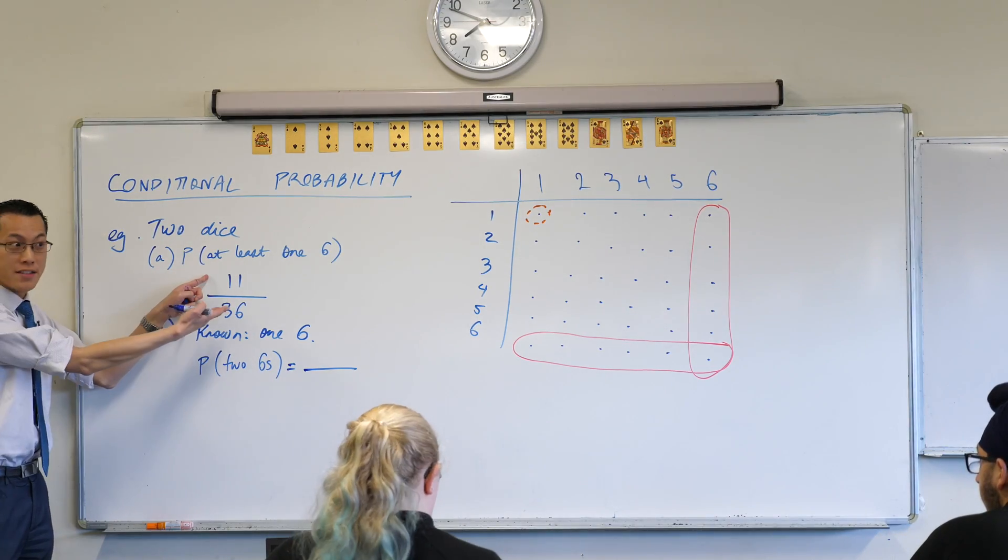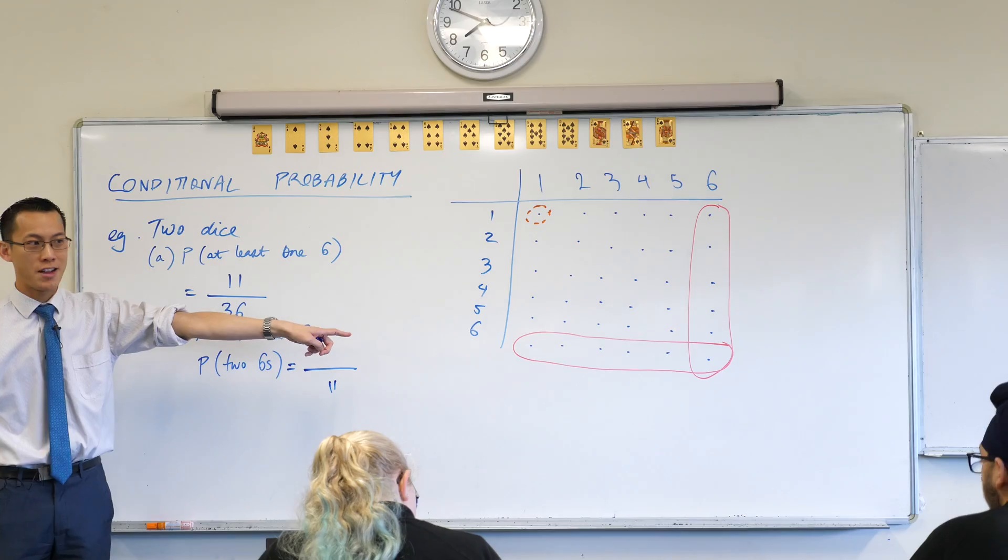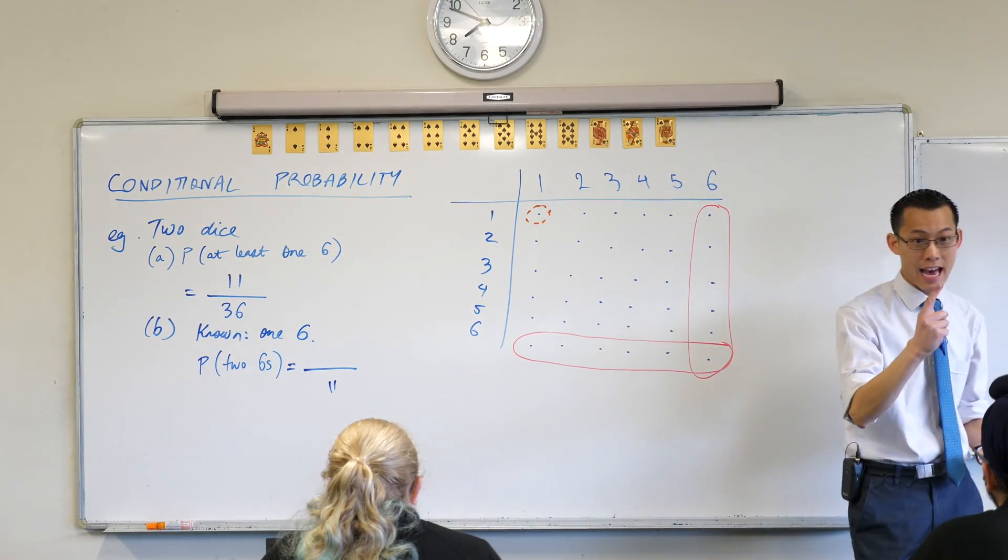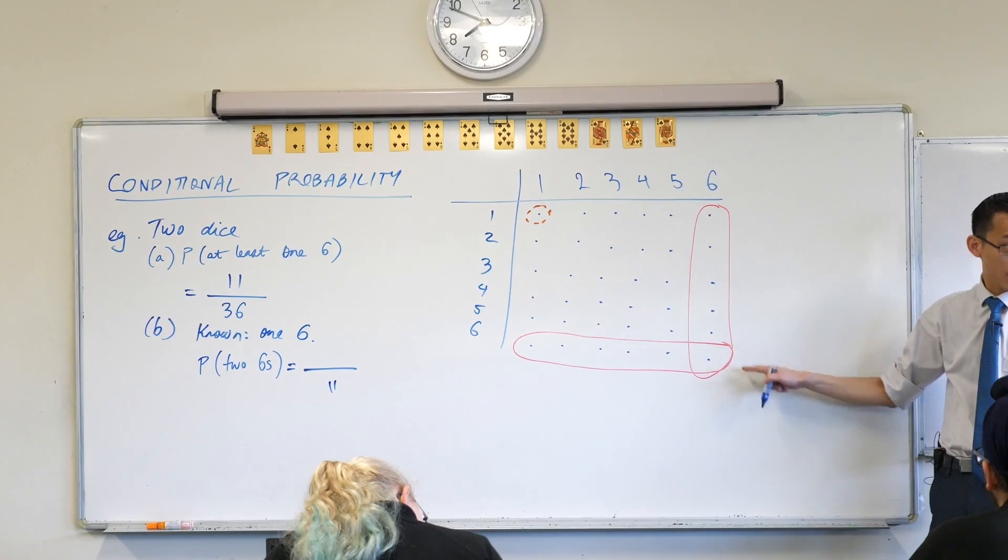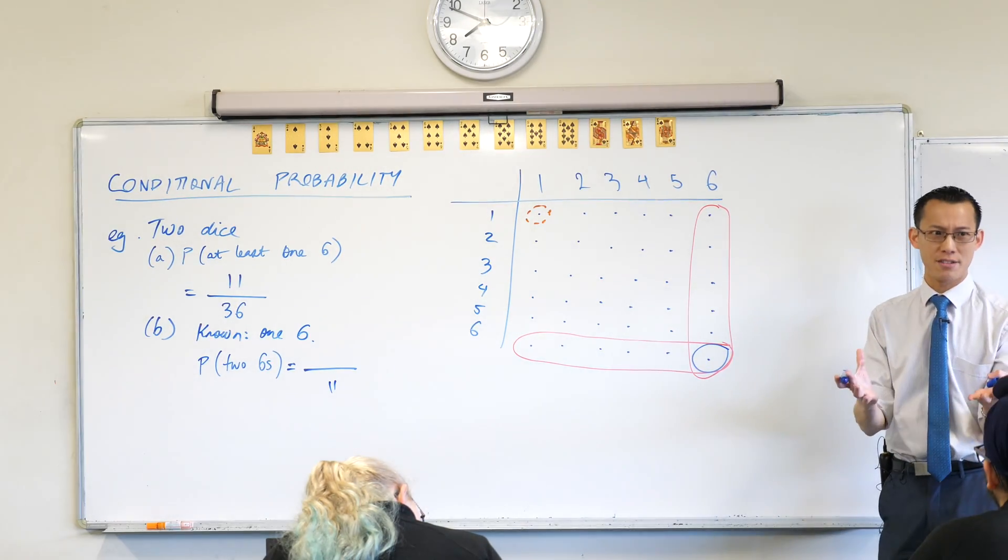The favorable that you had before, it's 11. Now have a look again. The favorable event, there is only one way for this to happen, but it's not one out of six, it's one out of the 11 that you've got here. Does this make sense?